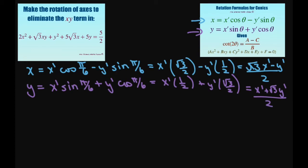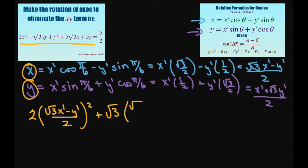Now this is the hard part. We're going to substitute in our x and our y back into our original conic here, and then we're going to have to simplify. So basically this is going to be 2 times square root of 3 x prime minus y prime divided by 2 squared plus square root of 3 times square root of 3 x prime minus y prime divided by 2 times x prime plus square root of 3 times y prime divided by 2.